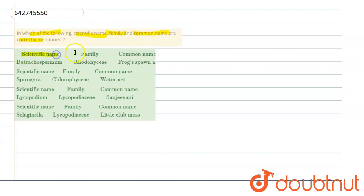So the scientific name we are given, family and common name we are given with. The first one is Batrachospermum, scientific name, and then is Rhodosai, family name. Then the common name is Frogspawn.